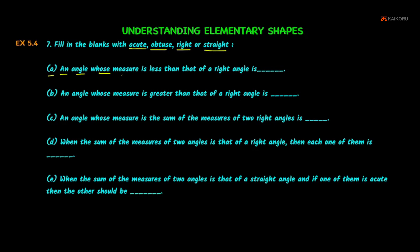Part (a): an angle whose measure is less than that of a right angle. A right angle is 90 degrees. So any angle less than 90 degrees is called an acute angle. The answer is acute.